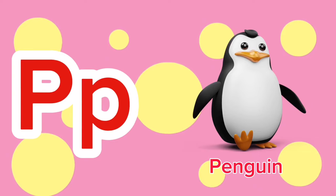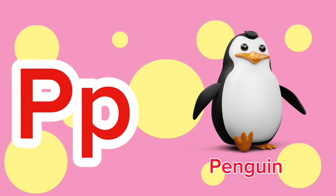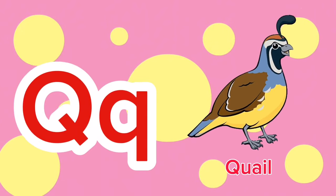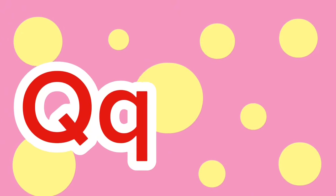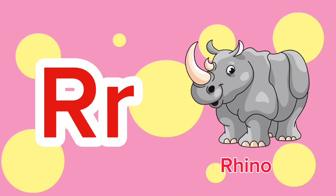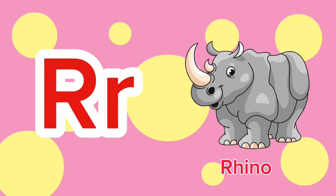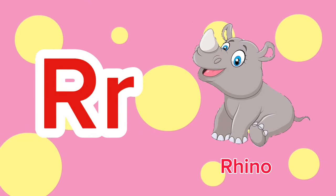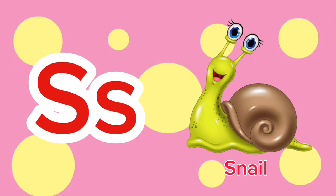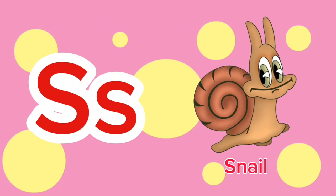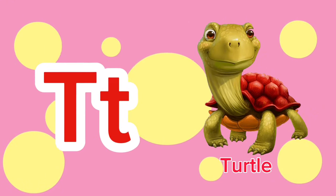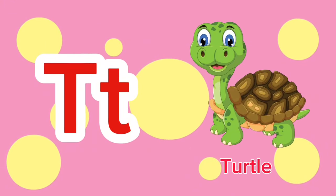P is for Penguin. P-p-penguin. P is for Penguin. P-p-p. Q is for Quail. Q-q-quail. Q is for Quail. Q-q-q. R is for Rhino. R-r-rhino. R is for Rhino. R-r-r. S is for Snail. S-s-snail. S is for Snail. S-s-s. T is for Turtle. T-t-turtle. T is for Turtle. T-t-t.